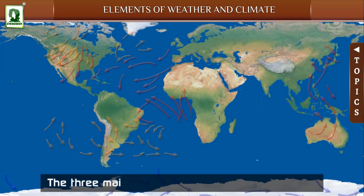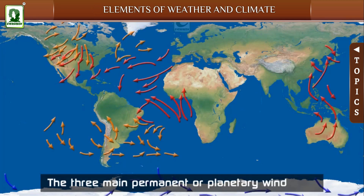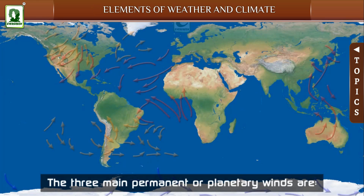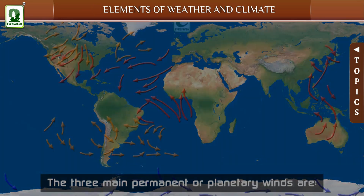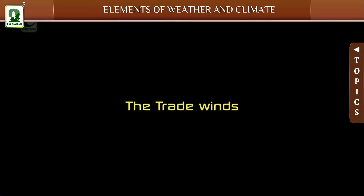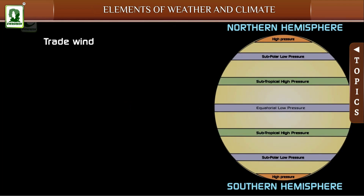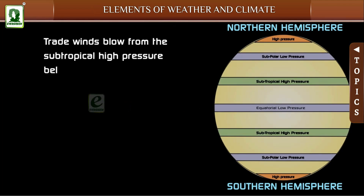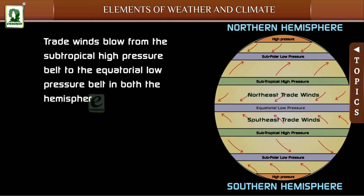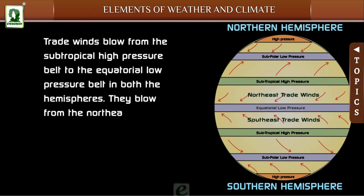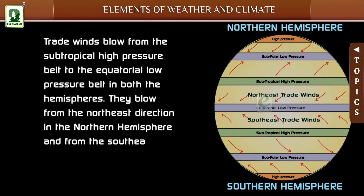The three main permanent or planetary winds are the trade winds, the westerlies, and the polar winds. Trade winds blow from the subtropical high pressure belt to the equatorial low pressure belt in both hemispheres — from the northeast direction in the northern hemisphere and from the southeast direction in the southern hemisphere.